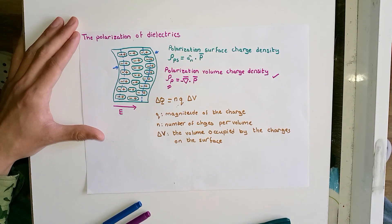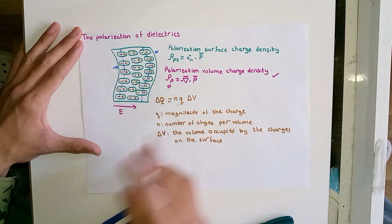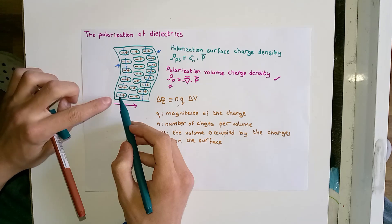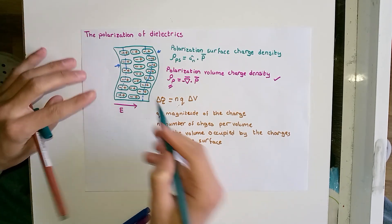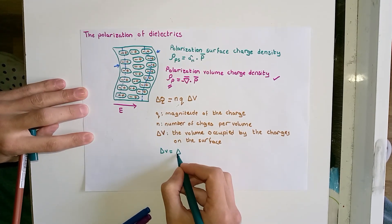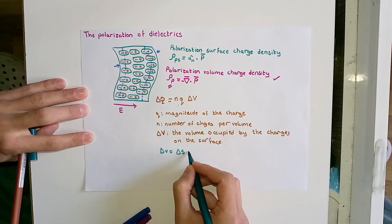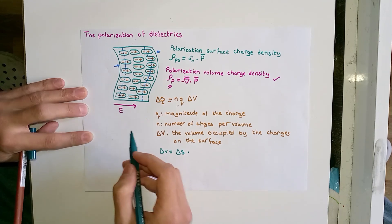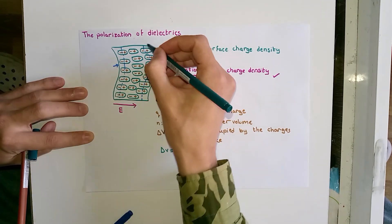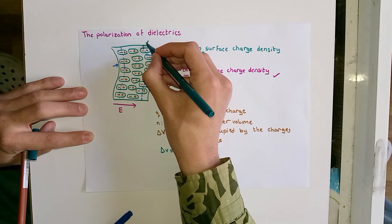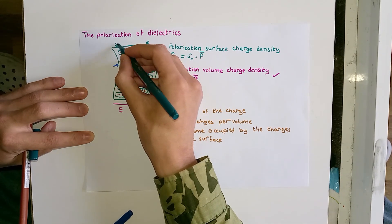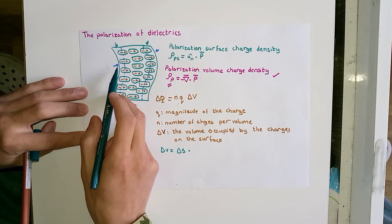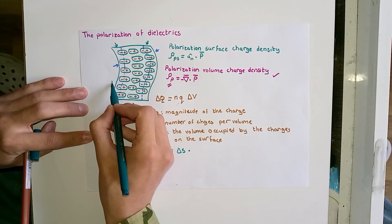Now, delta_v, the volume occupied by the charges on the surface, is equal to the area of the surface of the dielectric times the width of this volume. The volumes I am pointing to have the area delta_s.